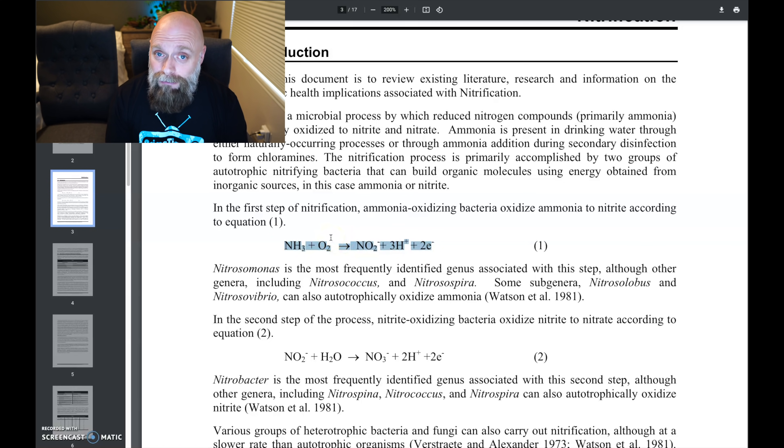Now, what are the microbes responsible for this? Because this is going to set the stage for a little bit later. Nitrosomonas is a big one, right? It is most frequently identified. But there are others. And so here we can see that Nitrosococcus, Nitrospira, and Nitrosolobus. So these are some of the other ones that are involved in going from ammonia to nitrite.